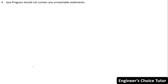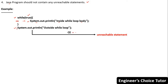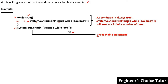The fourth rule is that a Java program must not contain any unreachable statements; if it does, you will get a compile-time error. For example, 'while(true) { System.out.println("inside while loop body"); }' followed by a statement after the loop — since the condition is always true, the body executes infinitely and the statement after the loop will never get a chance to execute. The compiler detects this and throws an 'unreachable statement' error.